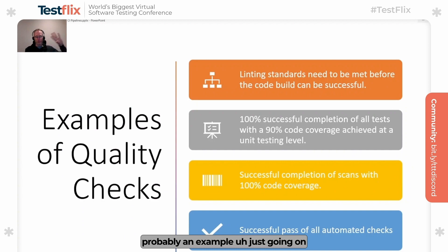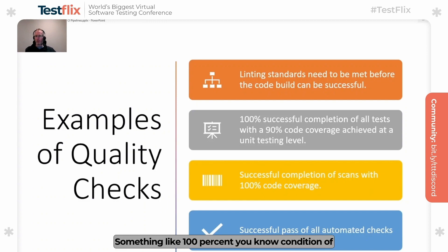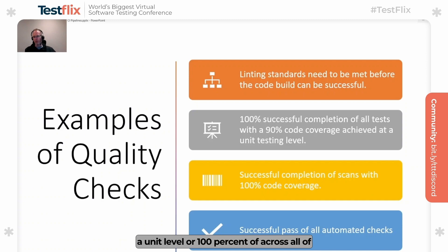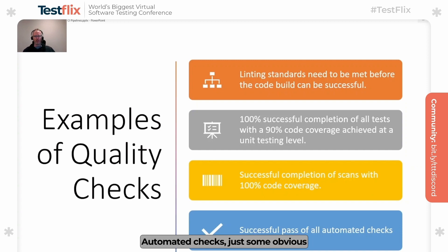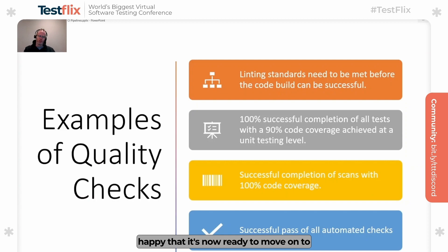Some examples of quality gate criteria: linting standards need to be met before the code can be built; something like 100% completion of all your tests with 90% code coverage at the unit level, or 100% across all code coverage once scans are done; and a successful pass of all automated checks. These are obvious examples of things you would put into a quality gate to ensure we've checked and measured things, and we're happy it's ready to move on to the next phase.